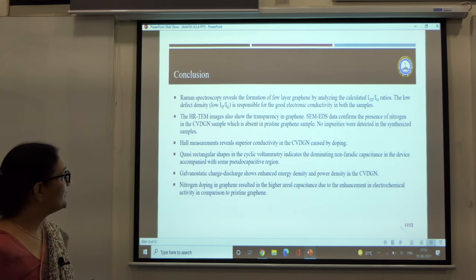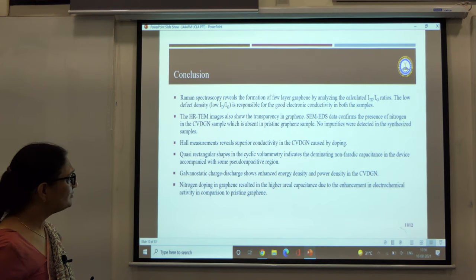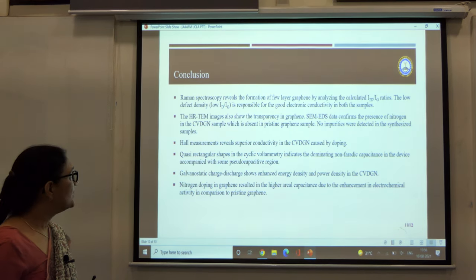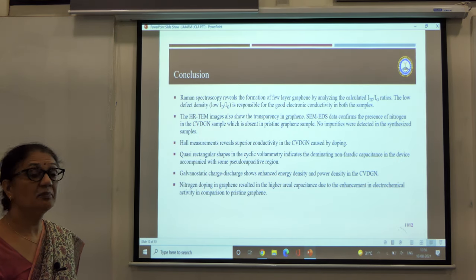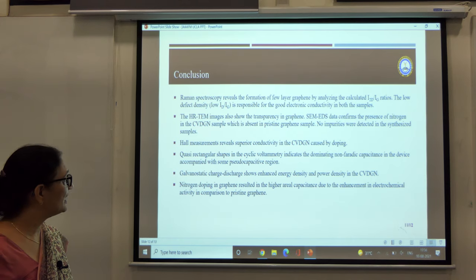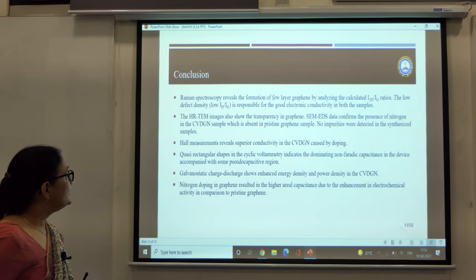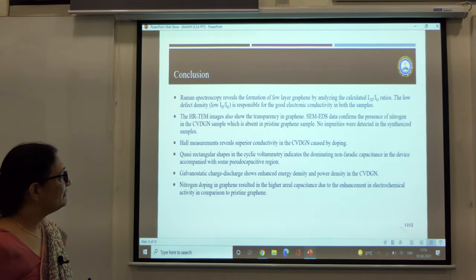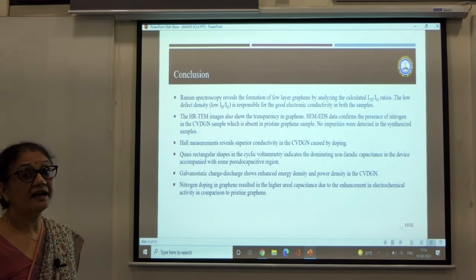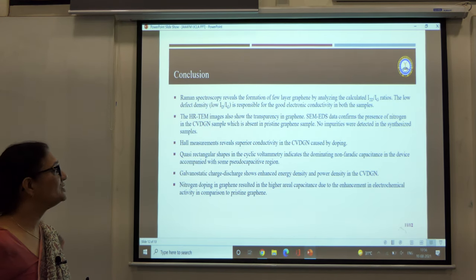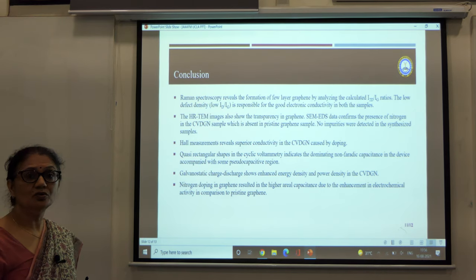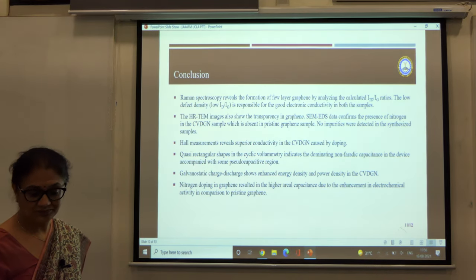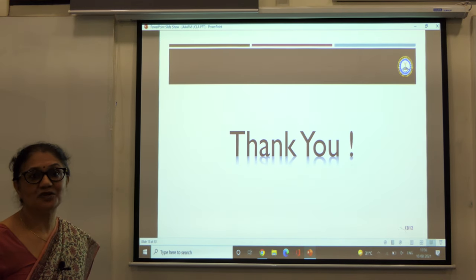Quasi rectangular shapes in the cyclic voltammetry indicate the introducing of non-Faradic capacitance in the device accompanied by the pseudo capacitive region. The galvanostatic charge discharge gives enhanced energy density and power density in the nitrogen doped graphene. The nitrogen doping in graphene results in higher areal capacitance due to the enhancement in electrochemical activity in comparison to pristine graphene. Thank you.